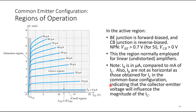IB curves are not as horizontal as those obtained for IE in the common base configuration. In common base, the output was IC versus VCB for different sets of IE, and IE was quite flat. Here we have IC versus VCE for different sets of IB, which are not as flat. This indicates that the collector-emitter voltage VCE will influence the magnitude of IC — as VCE increases, IC will also increase for specific values of IB.